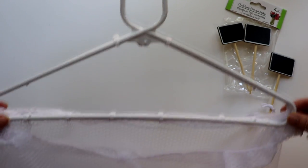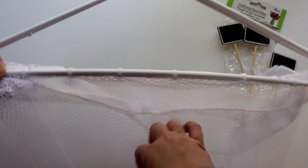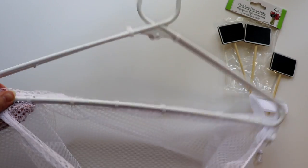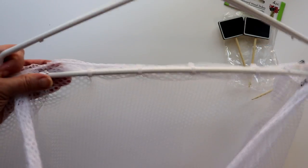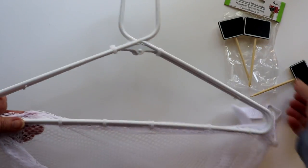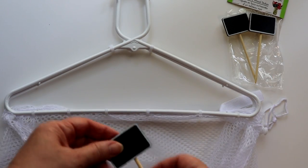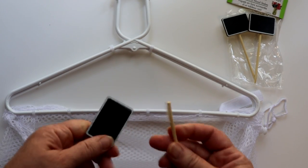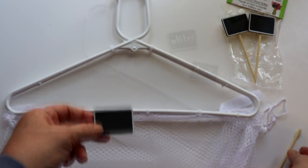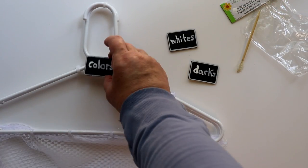This makes a great hanging laundry bag and you can make just one and use it as a hamper, but I actually made three to use as a laundry sorter for darks, colors, and whites. To make labels, I used these little chalkboard picks from the Dollar Tree. I snapped off the sticks, then used E6000 to glue to the top of the holder.